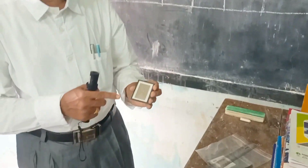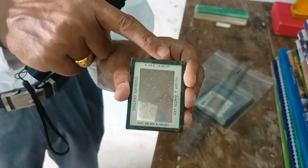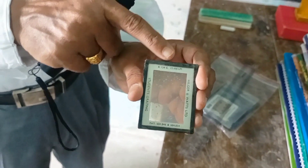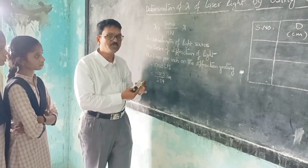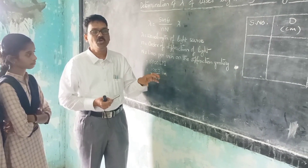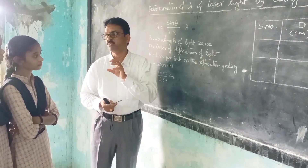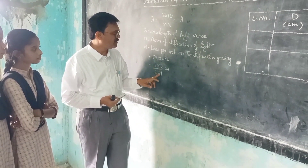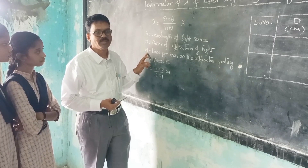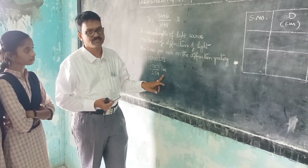In this grating, it has 15,000 lines per inch — that is, 15,000 LPI. So capital N equals 15,000 LPI. This can be converted into centimeters. We know that one inch is equal to 2.54 centimeters, so by dividing by 2.54, capital N equals 15,000 divided by 2.54 in centimeters.